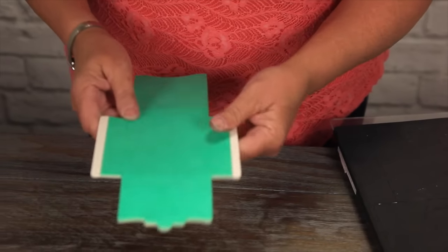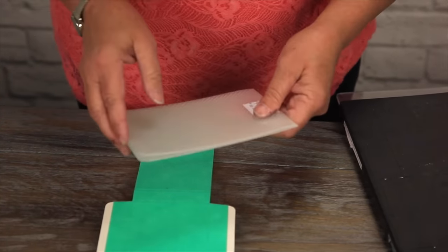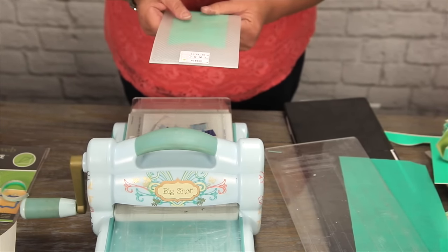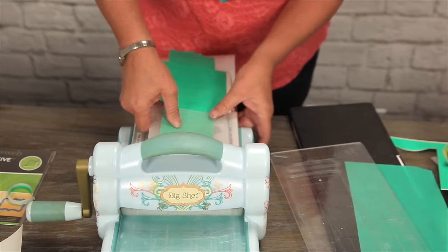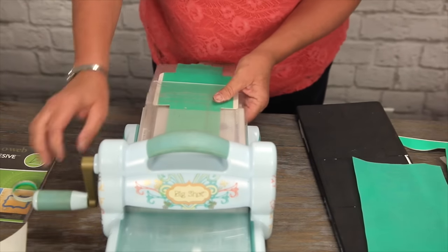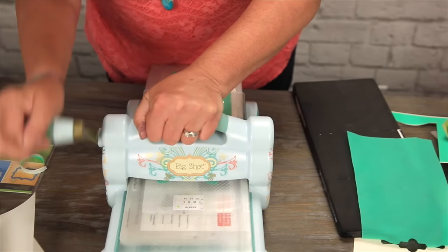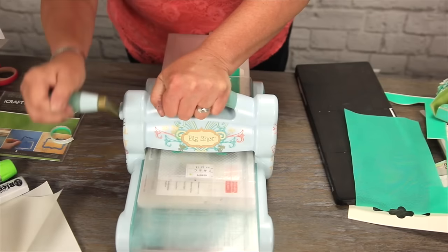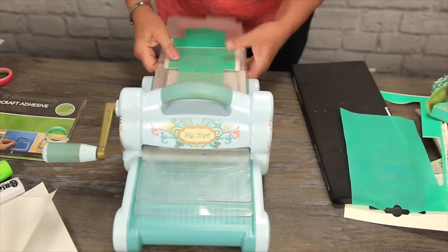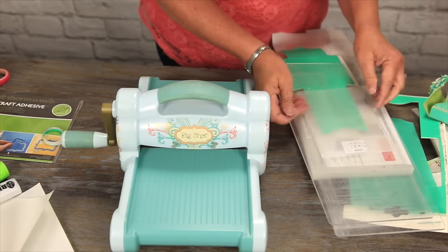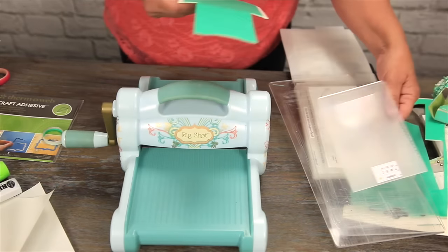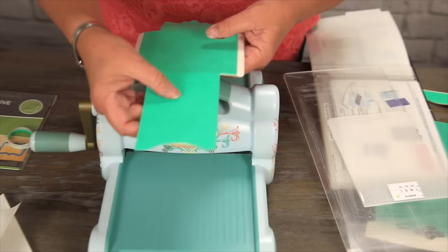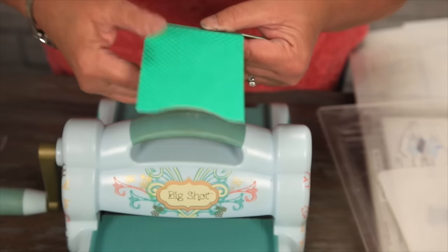Okay now we're going to emboss this in our embossing folder up here and place that inside. Put the plate on and run it through. Now I'm going to back this up just because I don't want that mark on the other side of it. Okay so here we go. We have a nice texture on there. There already is a texture on the material but this really brings it out. We still have our fold line here.